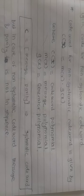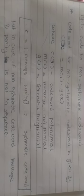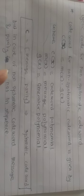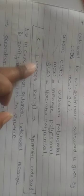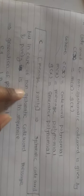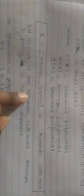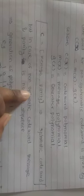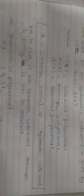The cyclic code is of two types: systematic code word and non-systematic code word. A systematic code word follows the pattern of message first and then parity. If this pattern is not followed by the code word, then that code word will be called a non-systematic code word.